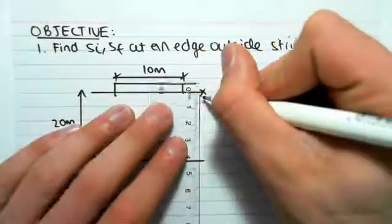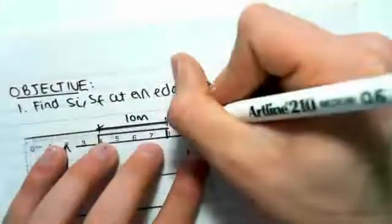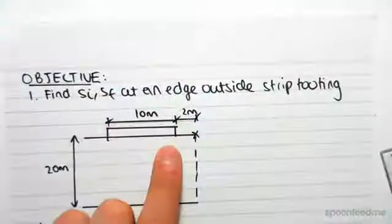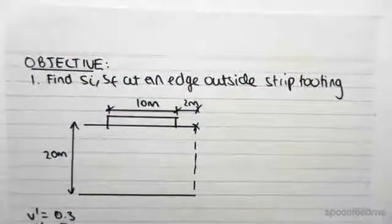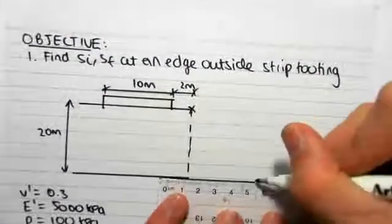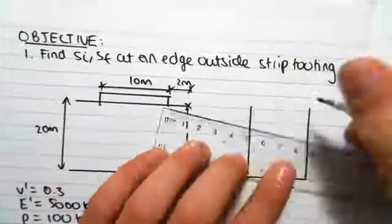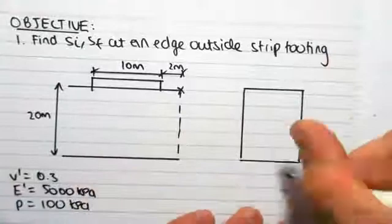We want to find the settlement out here, which is two meters beyond our strip footing. So what we do is draw our strip footing in plan—it's 10 meters, and we want to find the settlement at a point two meters beyond this, so this is an additional two meters.